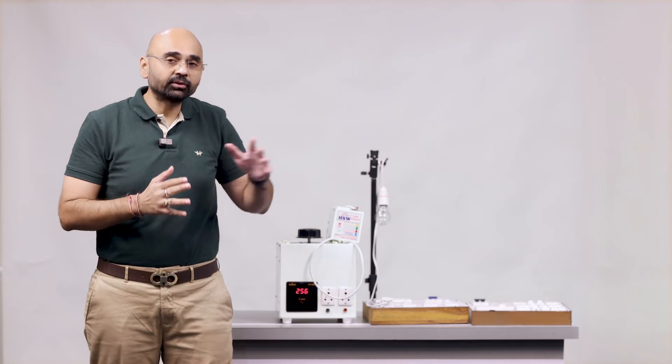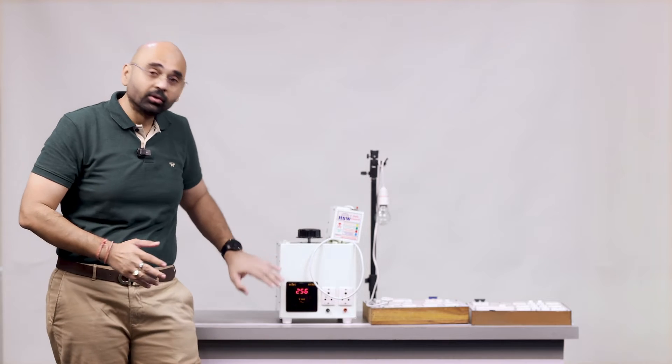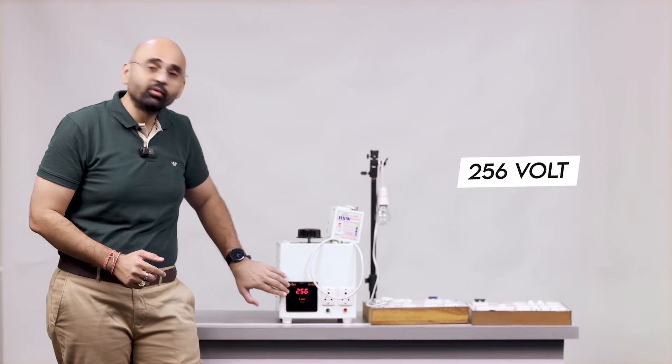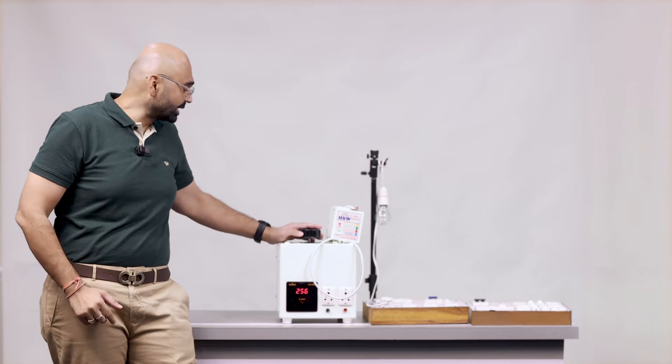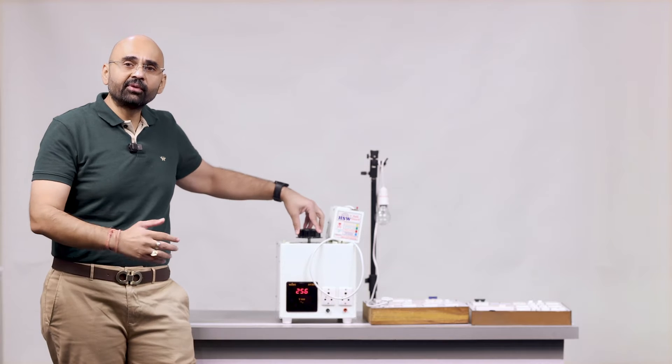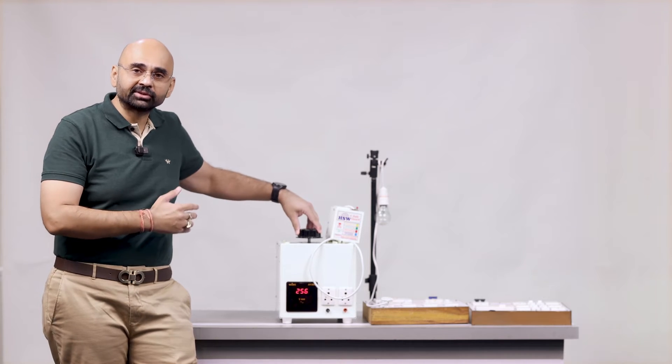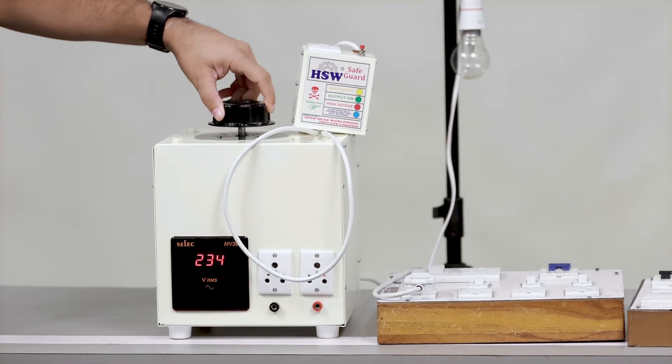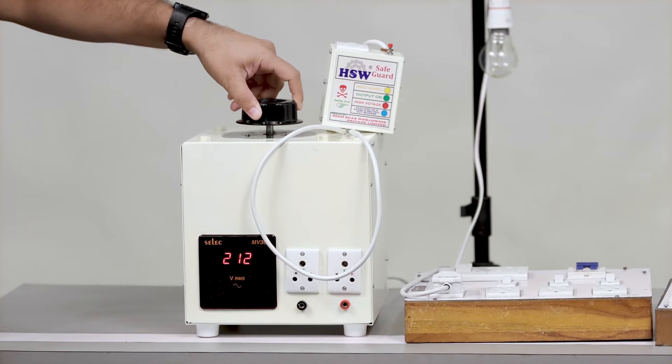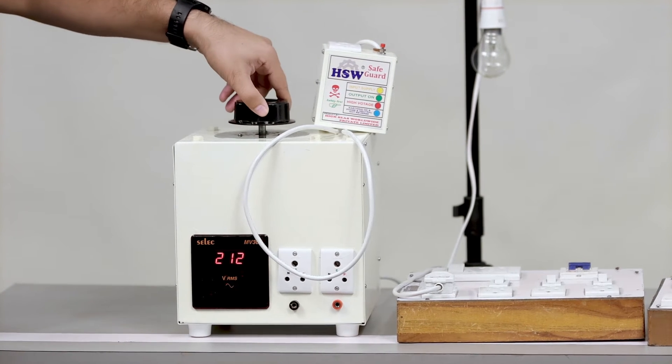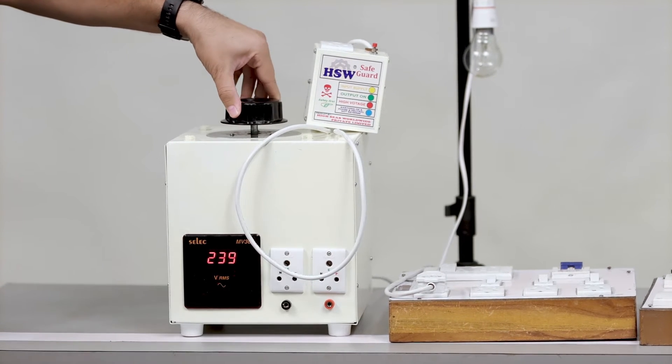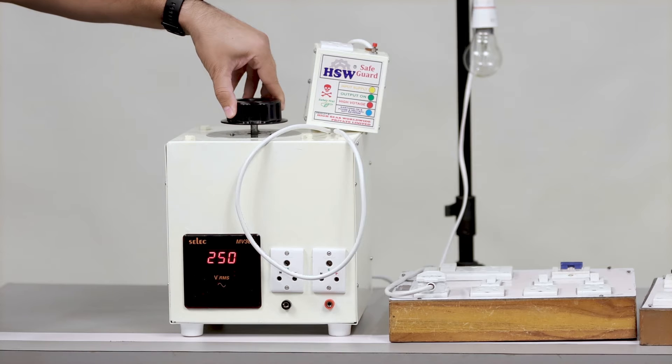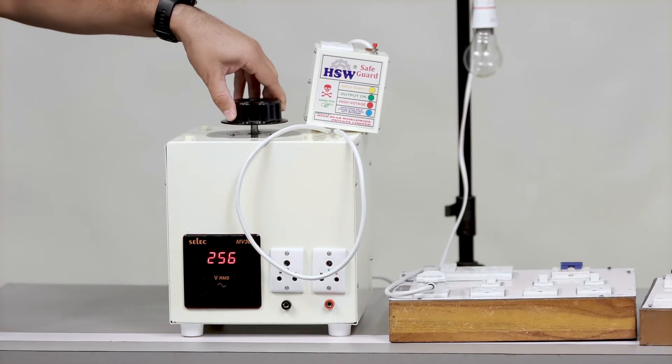Now we have given an electric supply to the variac. Right now the input voltage is 256 and here you can see the knob. If I move this knob on the left side, you can see the voltage input supply will reduce gradually. And if I turn it on the right side, the voltage supply will increase.